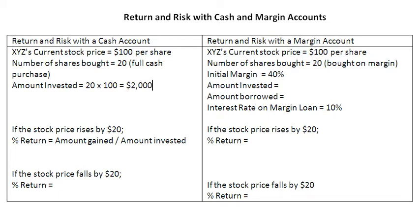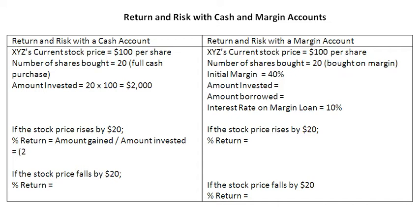Now let us see what happens to the percentage return of this investor if the stock price rises by $20. Percentage return is equal to the amount gained divided by the amount invested. Since the stock price is rising by $20, on each share there is going to be a gain of $20. Since there are 20 shares, the total amount of gain is 20 times 20, that is $400. Dividing by the total amount invested of $2,000 gives us a positive return of 20%.